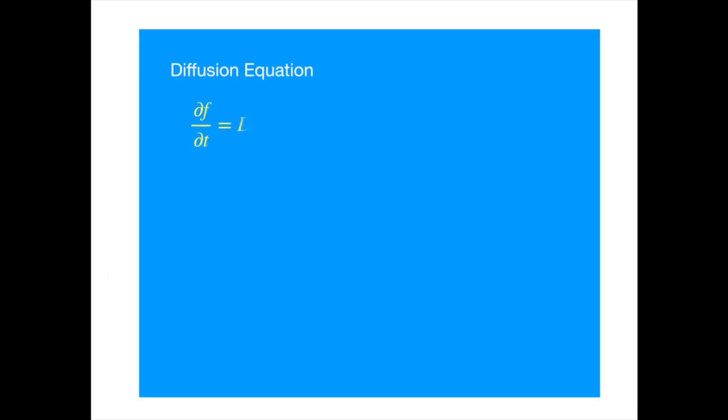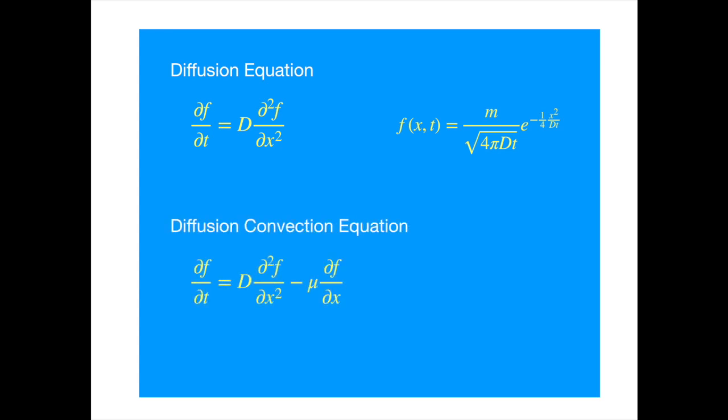We derived the diffusion equation and we then determined its fundamental solution using the similarity method. We then derived the diffusion convection equation which has an additional convection term, but we haven't seen its solution yet, so we're going to solve this equation now. It's going to be easy as we already know the solution of the diffusion equation, so we're going to rely on the similarity of this equation with the diffusion equation.